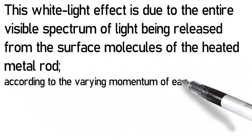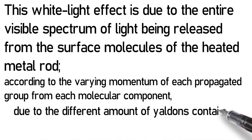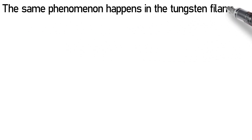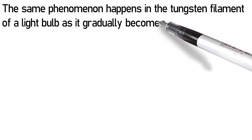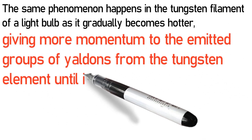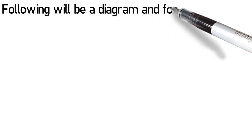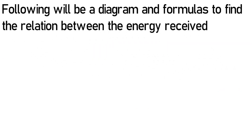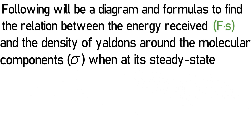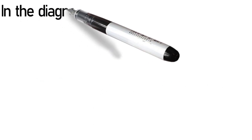This is due to the varying momentum of each propagated group from each molecular component, caused by the different amount of Yaldins contained within those propagated groups. The same phenomenon happens in the tungsten filament of a light bulb as it gradually becomes hotter, giving more momentum to the emitted groups of Yaldins from the tungsten element until it begins to emit propagated groups of visible light. Following will be a diagram and formulas to find the relation between the energy received and the density of Yaldins around the molecular components when, at a steady state, the energy gained equals the energy lost.